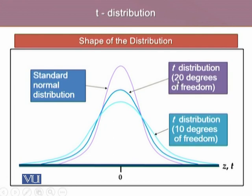But as the sample size increases, degrees of freedom increase from 10 to 20, the peak goes up. And the tails are less heavy than at degrees of freedom of 10. As the degrees of freedom keep increasing, it will approximately reach up to the standard normal distribution.